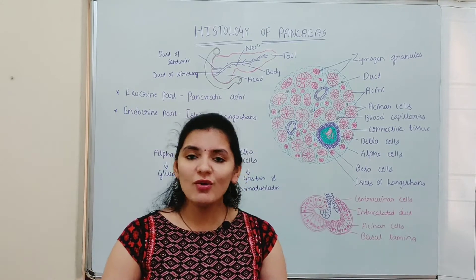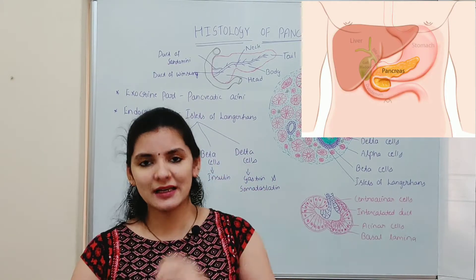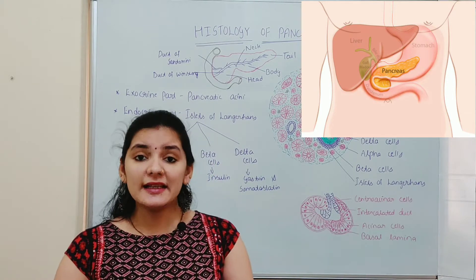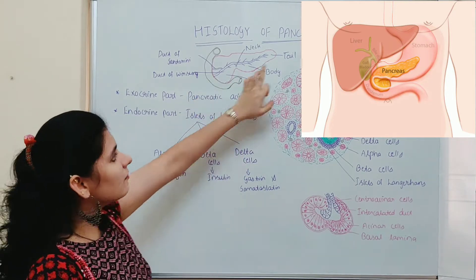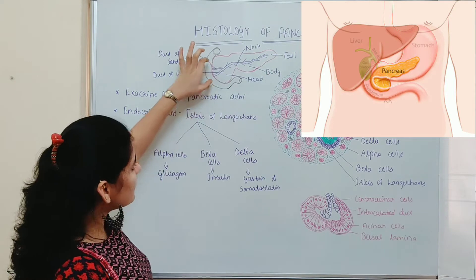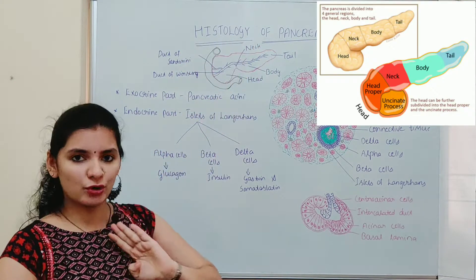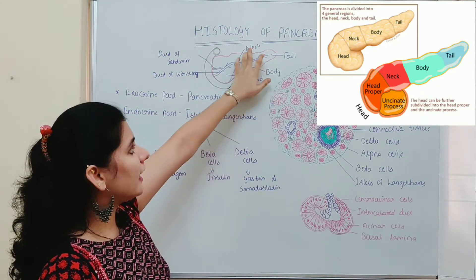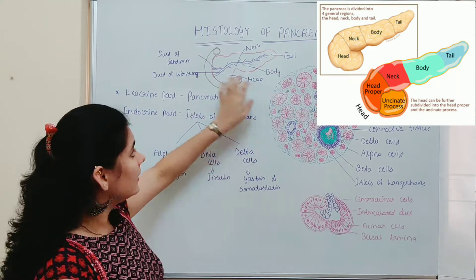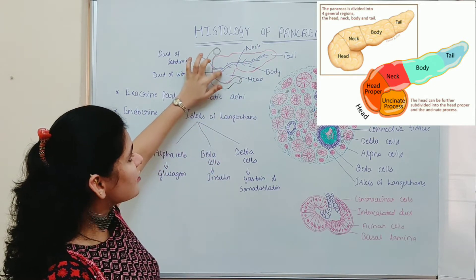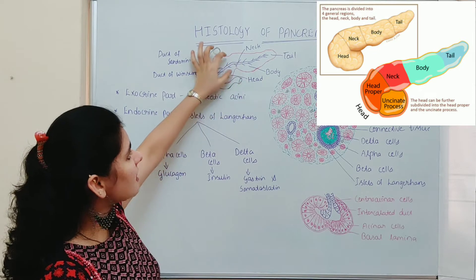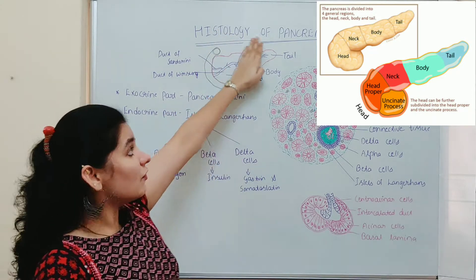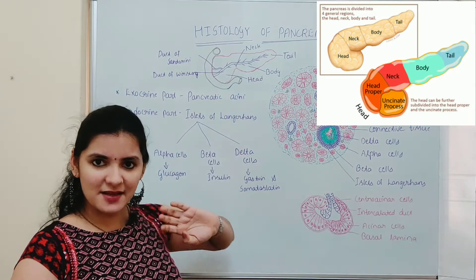Pancreas is a tubular gland and it is present just behind the stomach. It extends between duodenum and spleen. This tubular gland has mainly four parts: head, body, neck, and the tail part. The head part of the pancreas is joined to the body through a narrow constriction known as neck.